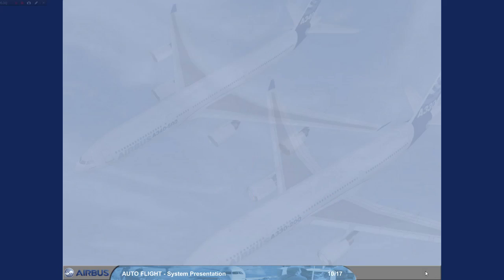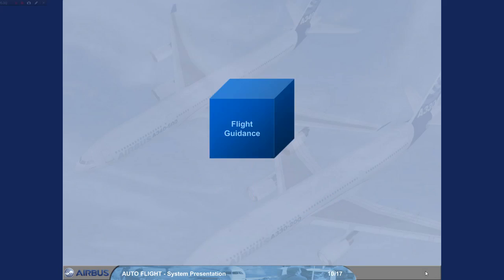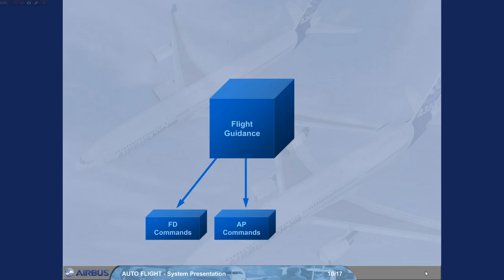The flight guidance part of the FMGS provides: flight director commands for the pilot to control pitch, roll, and yaw; autopilot commands to automatically control pitch, roll, and yaw; and auto-thrust commands to automatically control thrust.